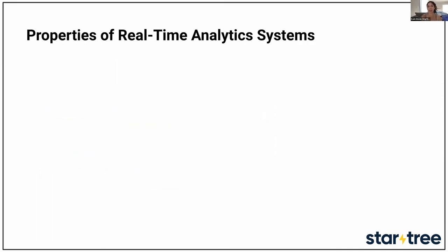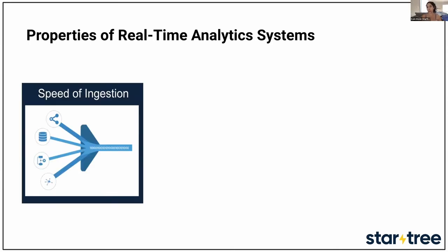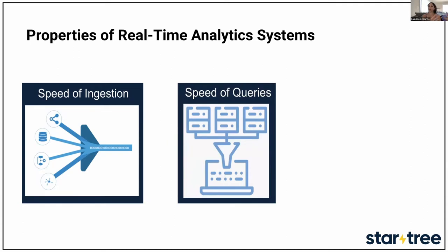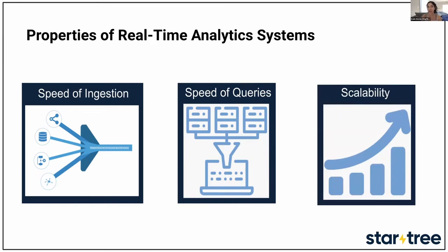There are three properties you substantially need to build a solid real-time analytics system. First: speed of ingestion — you must pull data in very quickly as soon as something happens. Second: speed of queries — you must make that data accessible to end users in real time as well. Third: scale — you may have hundreds of thousands of users querying real-time data at any given second. So pull it in, pull it back out, and show it at scale in real time.